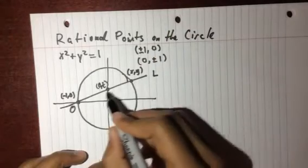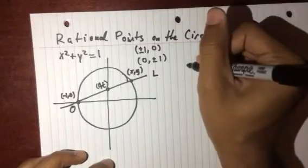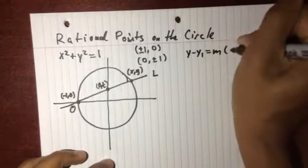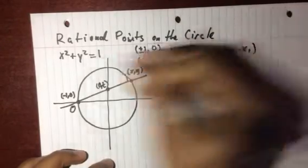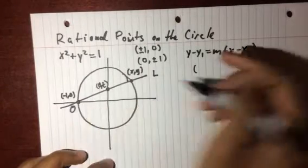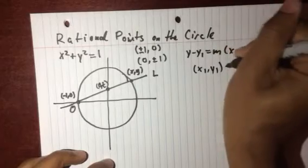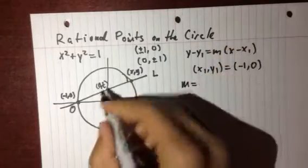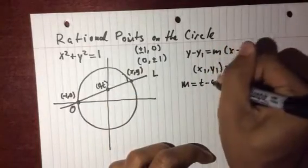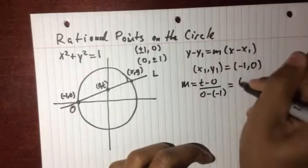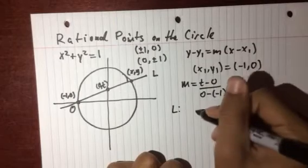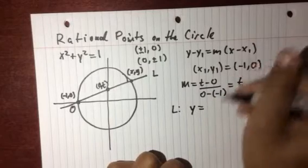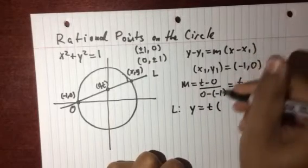One thing we could do is we can say okay what's the equation of this line. So use point slope formula: y minus y1 equals m times x minus x1. We could pick this point, this point is negative one zero. So x1 y1 equals negative one zero, and the slope is the change in y over the change in x, so it's t minus zero over zero minus negative one which is t. So the equation for our line is y equals t times x plus one.